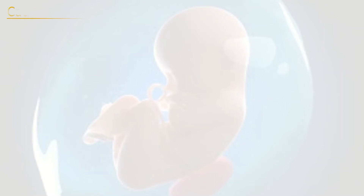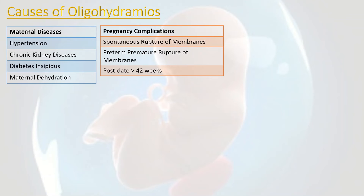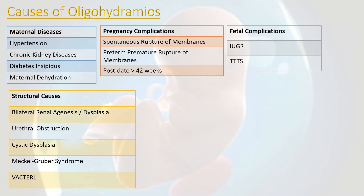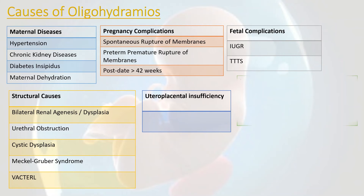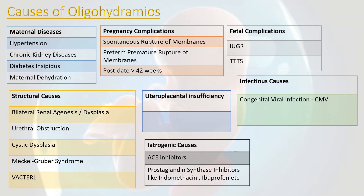To summarize, the complete list of causes of oligohydramnios includes: maternal diseases such as hypertension, chronic kidney disease, diabetes insipidus, and maternal dehydration; pregnancy complications including spontaneous rupture of membranes, preterm premature rupture of membranes, and post-date pregnancy over 42 weeks; fetal complications including IUGR and TTTS; structural causes including bilateral renal agenesis or dysplasia, urethral obstruction, cystic dysplasia, Meckel-Gruber syndrome, and VACTERL syndrome; uteroplacental insufficiency; infectious causes such as congenital viral infections like CMV; iatrogenic causes like ACE inhibitors and prostaglandin synthase inhibitors such as indomethacin and ibuprofen; and idiopathic causes.